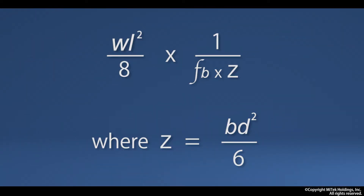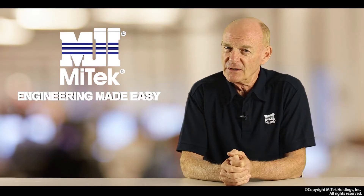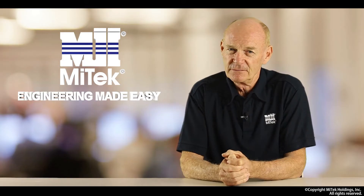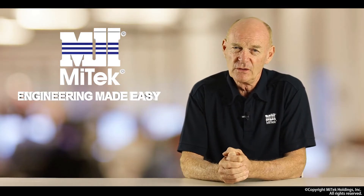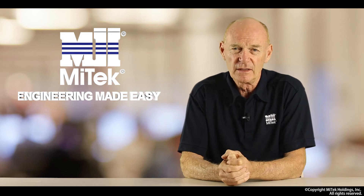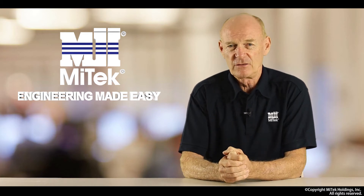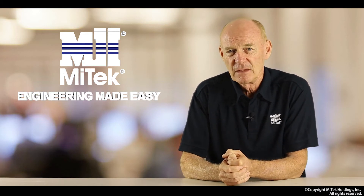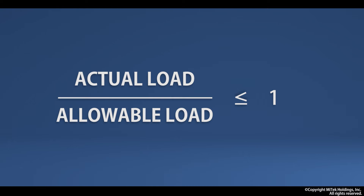If I told you the formula we use to design a timber beam is WL² ÷ 8 × (1 ÷ FB × Z), where Z equals BD² ÷ 6, you'd think that looks pretty complicated. Well, I can assure you we can turn that into a formula that is much easier to understand.